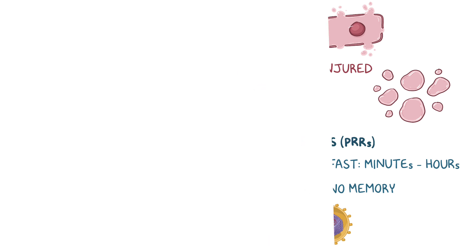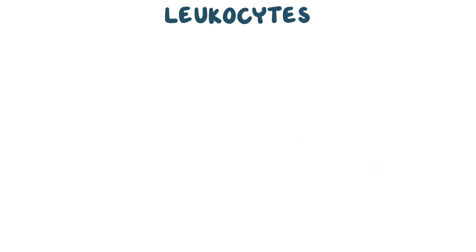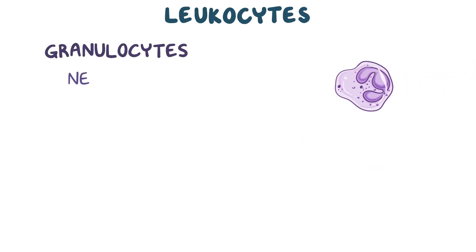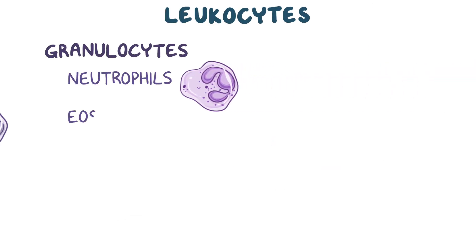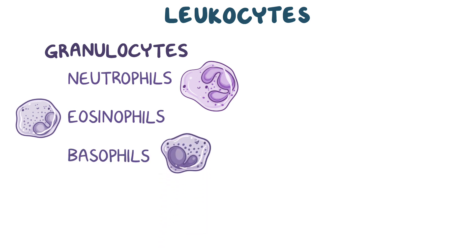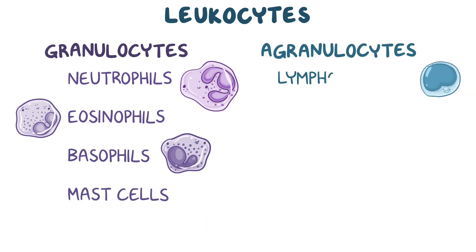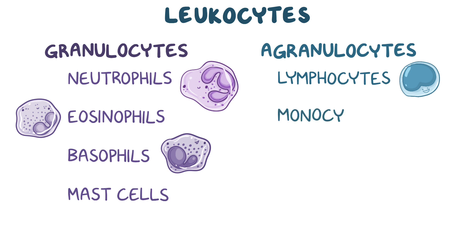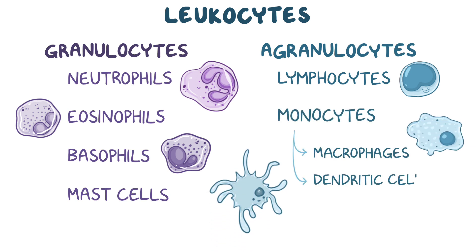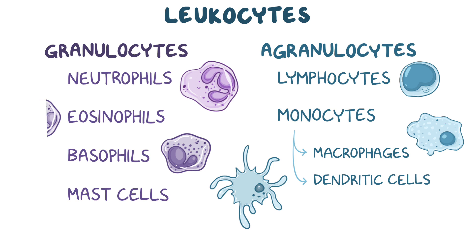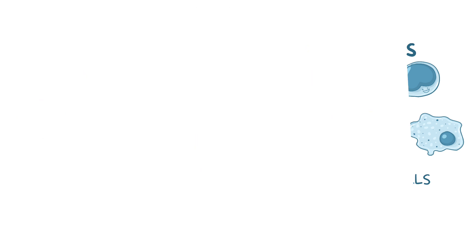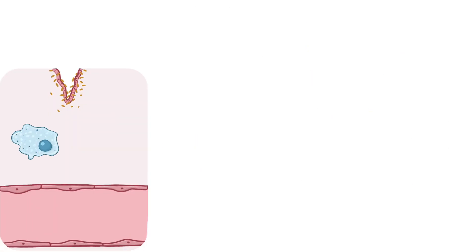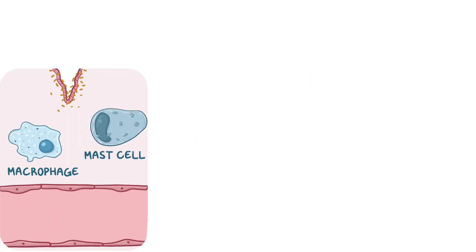Generally speaking, there are two main types of leukocytes: granulocytes, which include neutrophils, eosinophils, basophils, and mast cells; and agranulocytes, which include lymphocytes and monocytes, which can differentiate into macrophages or dendritic cells. The inflammatory process usually starts with either macrophages or mast cells, both of which are found in the tissues.